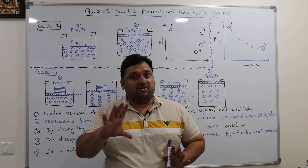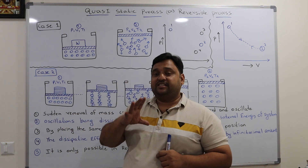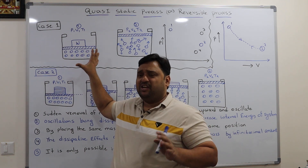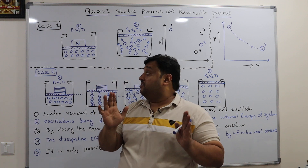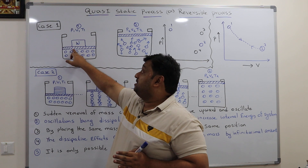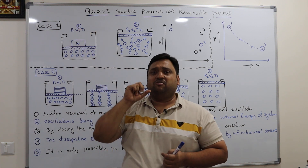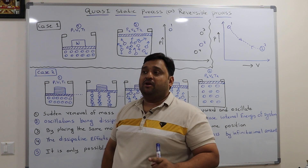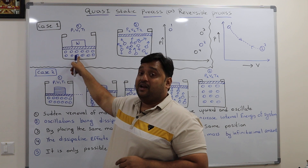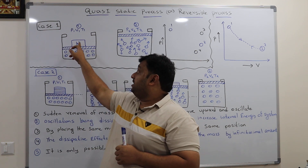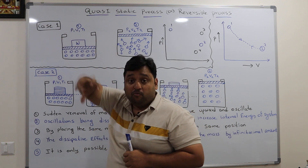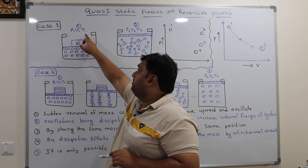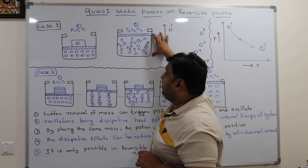Let us take a small example of a piston and cylinder. This is a piston inside a cylinder, and there is a gas — this will be our system, consisting of a set of molecules. On top of the molecules there is the piston, and on this piston we have placed a certain mass. The pressure, volume, and temperature define state 1. What we want to do is bring this system from state 1 to a different state. If we suddenly remove the mass, the molecules inside will move randomly.